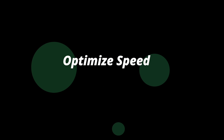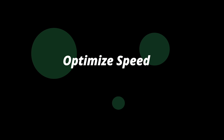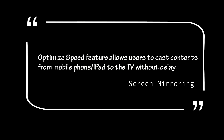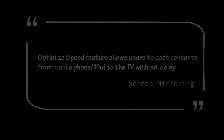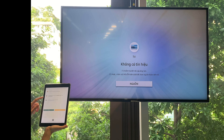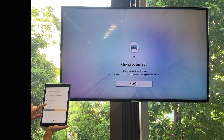What if your TV is not on Android TV? Don't worry, just click the Optimize Speed button. But please bear in mind that this button does not support Roku TV. The Optimize Speed feature allows users to cast content from a mobile phone or iPad to TV without delay. Step 1, click the Optimize Speed button and follow the instructions on the screen.